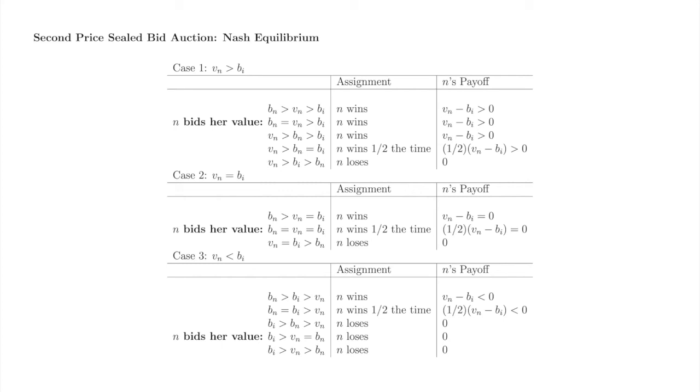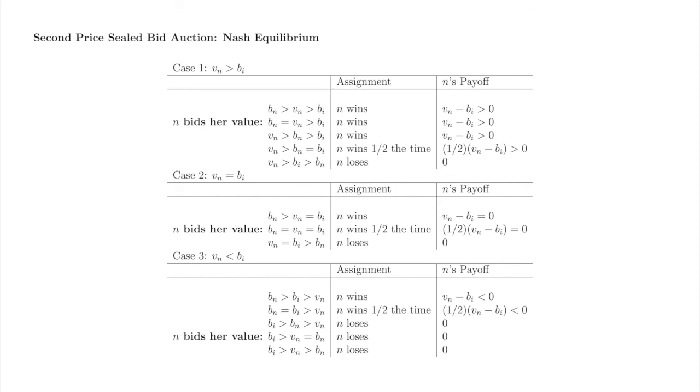This table lays out the details of the possible outcomes based on the relationship between valuation and the highest bid, b_i, not belonging to bidder little n. We can see that in each case, a bidder is no worse off, and sometimes better off, for bidding her own valuation.